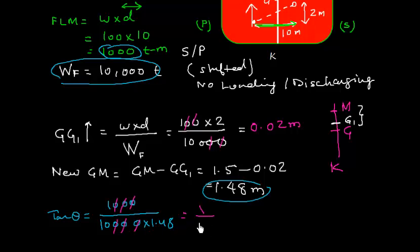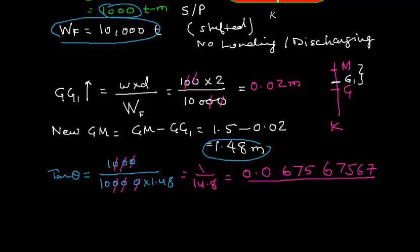I get 1 by 14.8. 1 by 14.8 gives me 0.067567567. And all I need to do is get the tan inverse of that. Tan inverse of this value will give me theta which is 3.86546117. Or simply theta is equal to 3.9 degree port or starboard. It will depend where the grain has shifted.